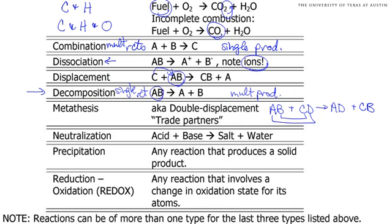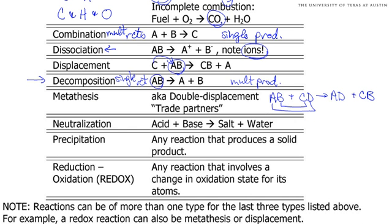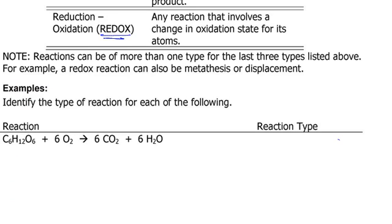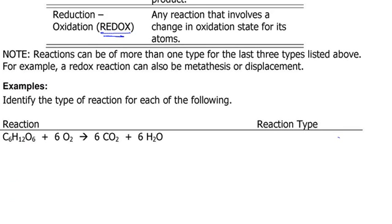Then we have some others. The neutralization, that's the acid and base gives salt and water. The precipitation, where we have at least one solid product. And then we have oxidation reduction, which is called redox. We'll learn a lot more about those, but it has to do with change in oxidation state, very important for electrochemistry and honestly aging as well.